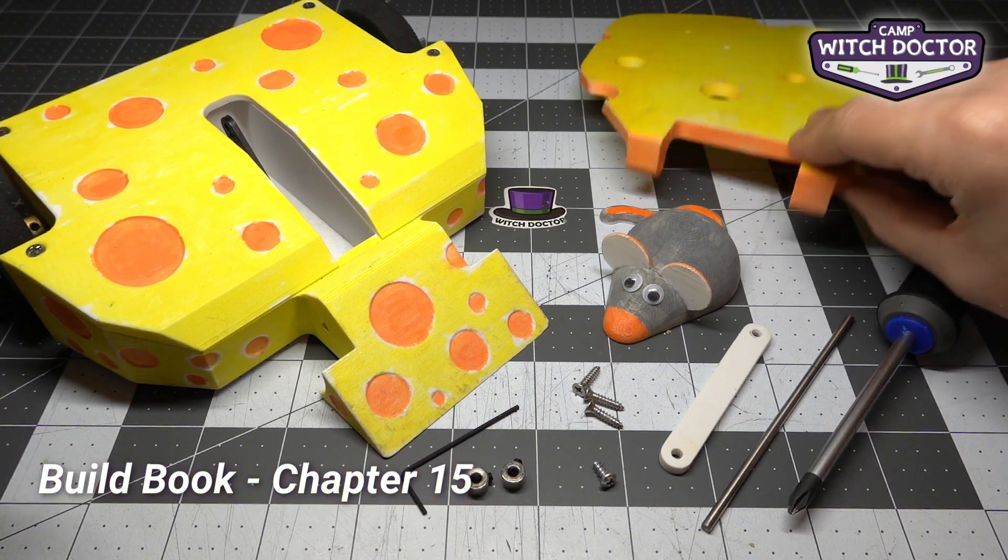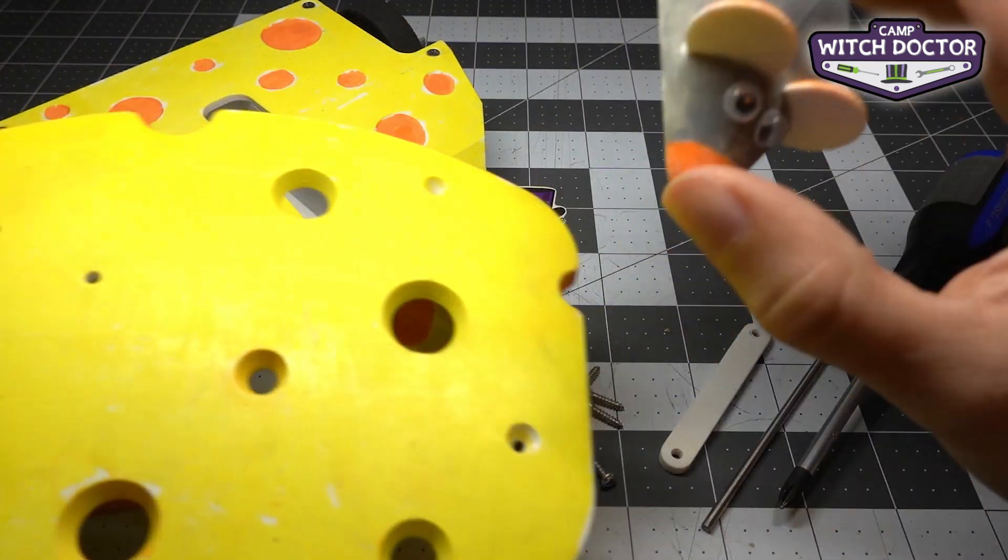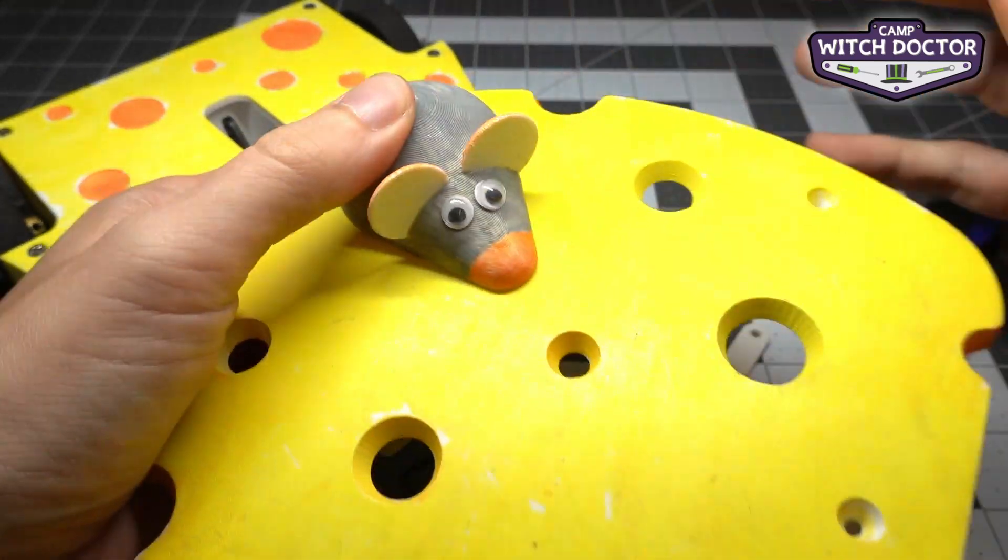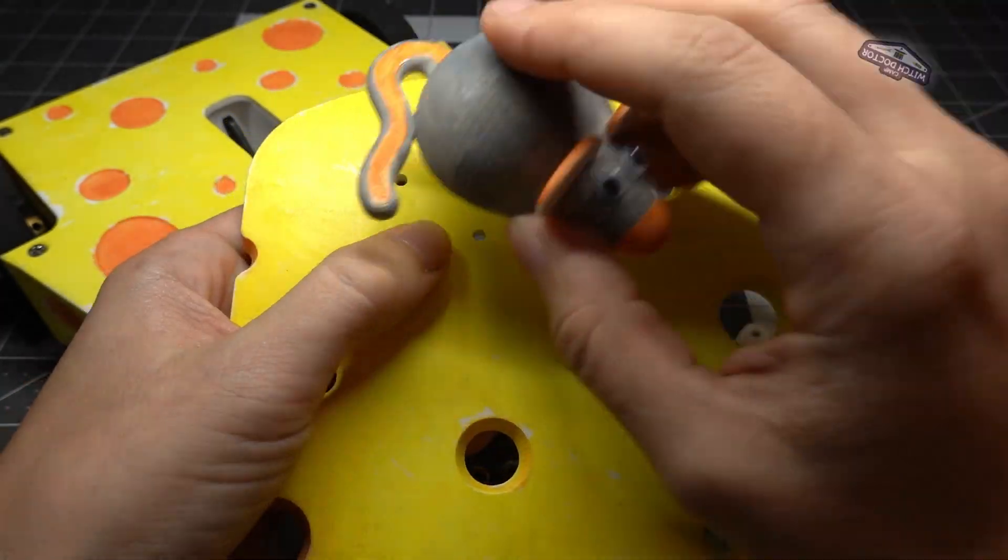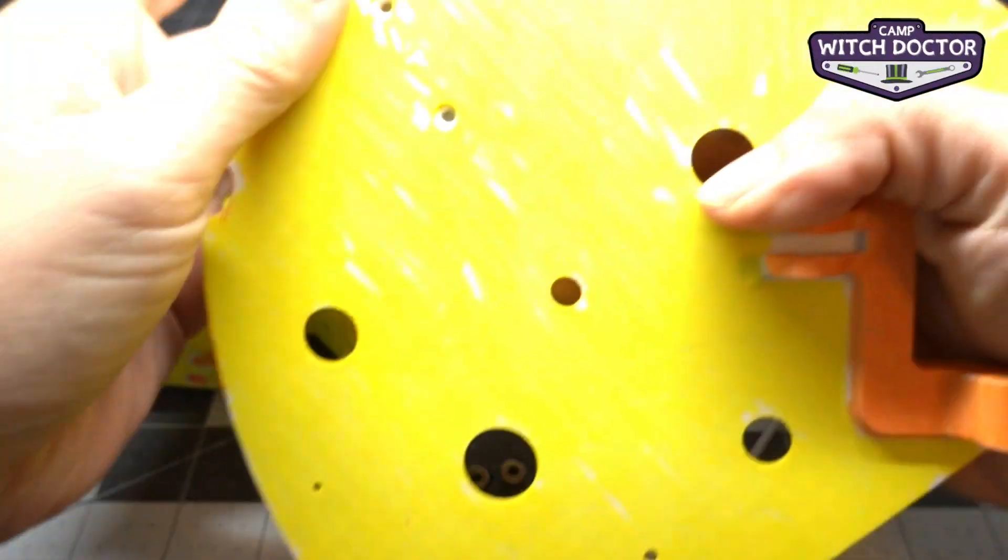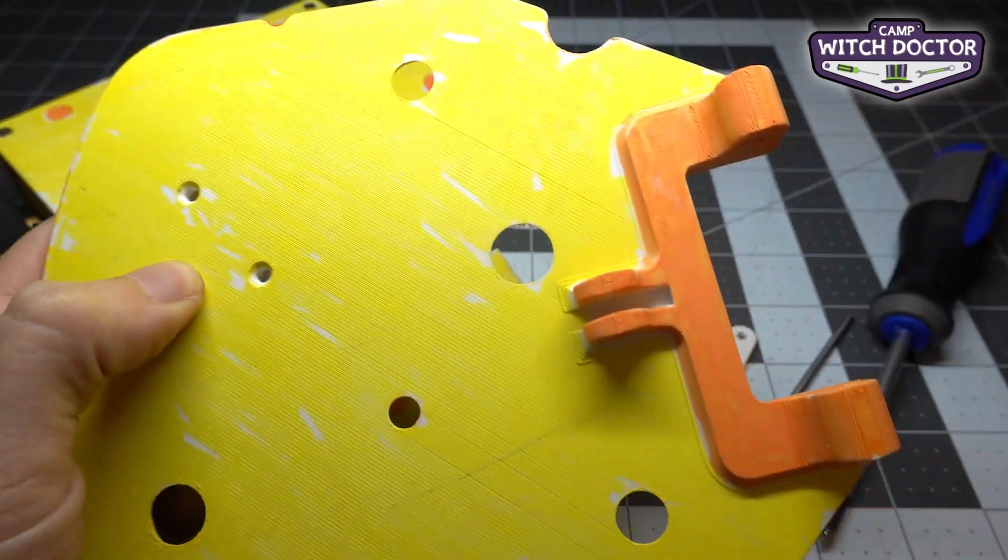If you're building Big Cheese, you have to attach the mouse onto your weapon. The mouse has two holes on the back and you'll see two holes on the cheese flipper arm. So you're going to line up those holes and then put screws in each one.